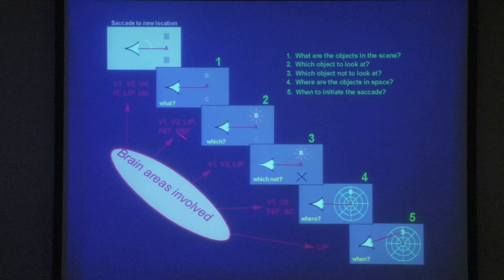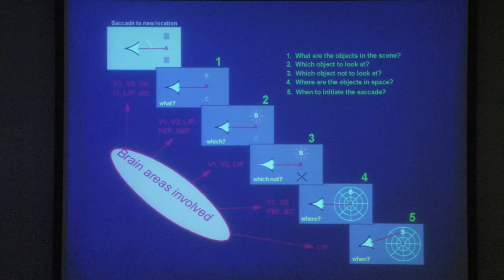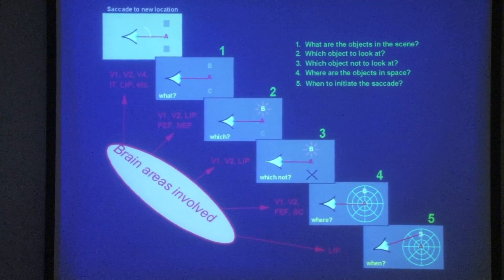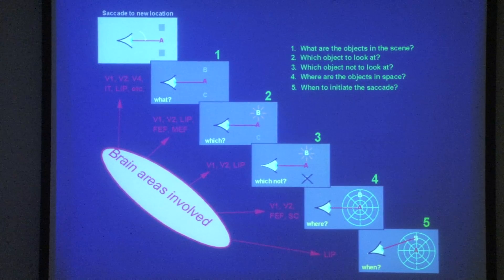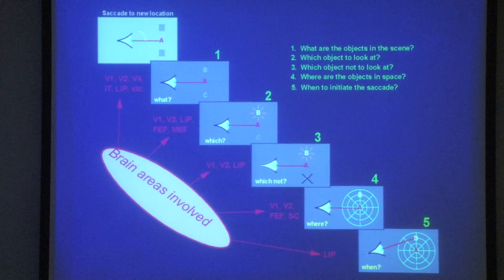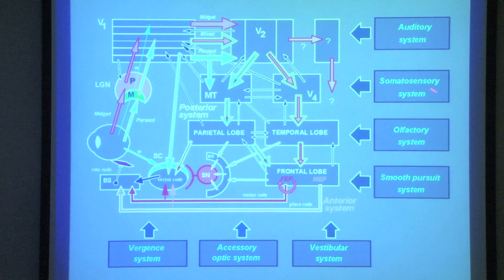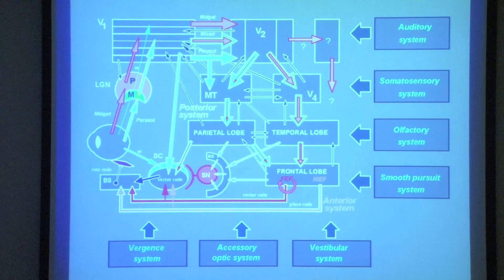Even though we never think about it, an incredible number of structures and tasks are involved in each eye movement. We have to select a target, decide which one to look at among dozens of options, decide which one to ignore, and then use a spatially organized motor system to generate the eye movement. Many other systems are also involved — hearing, touch, and so on. The so-called anterior and posterior systems reach the brainstem through various channels to ultimately drive the eye muscles.